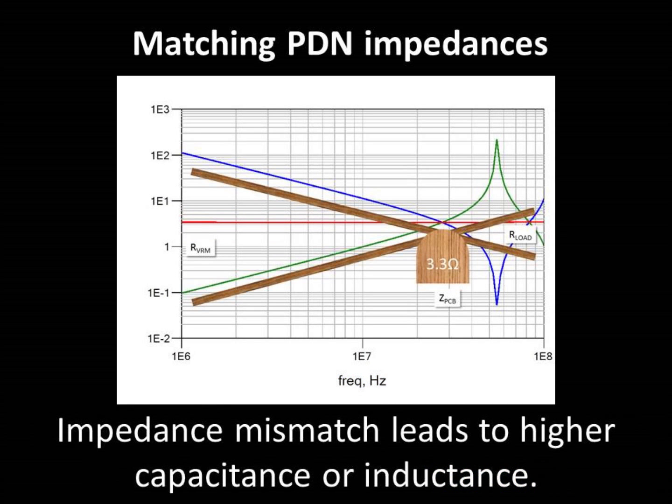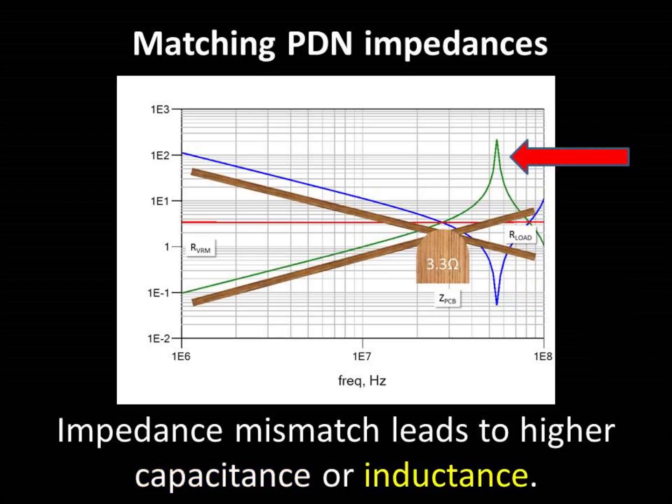Conversely, any mismatch leads to higher capacitance or inductance, as depicted here. Either one is undesirable. As these impedance curves illustrate, impedance matching in PDNs is like balancing a teeter-totter.